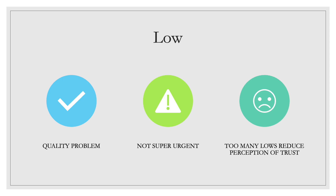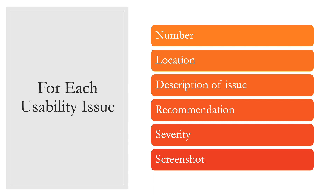Now that you've given a severity rating for each usability issue, there are a few things you want to do for each issue: number it, list the location or locations of the issue, describe the issue, give a recommendation for how it could be fixed, write the severity rating down, and take a screenshot of where the issue is.